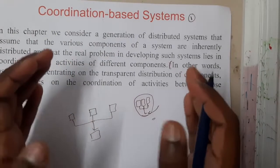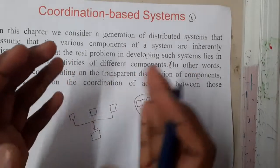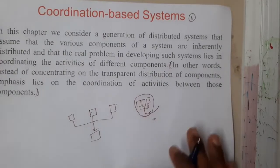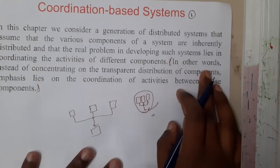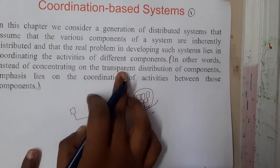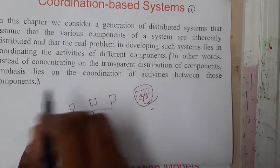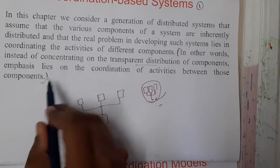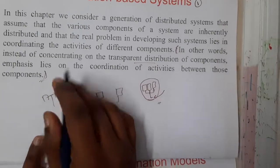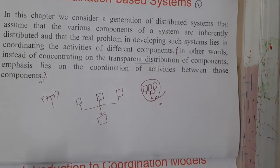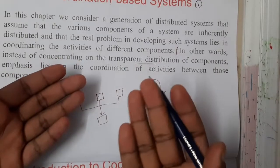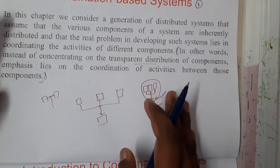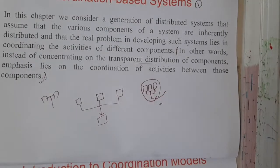Basically, a few systems or a group of systems will combine to do something. In other words, instead of concentrating on the transparent distribution of components, emphasis lies on the coordination of activities between the components — how they are transferring data, how messages are helping each component. Those things fall under coordination-based systems.